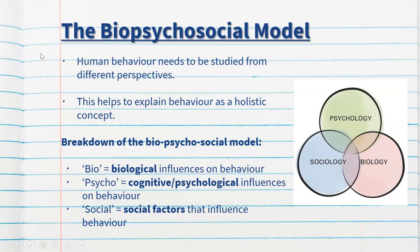The biopsychosocial model in psychology refers to the different perspectives that we need to study behaviour. Human behaviour needs to be studied from multiple perspectives — we can't just look at one because we could be missing vital information. This helps to explain behaviour as a holistic concept, meaning we need to look at all three parts: the psychological, social, and biological factors — hence the term biopsychosocial.